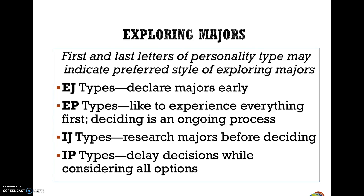You can see how your letters relate to exploring and deciding on majors. If your first letter is E and last letter is J, you can declare majors pretty early. If your first letter is E and last letter is P, you like to experience everything first before deciding — deciding is an ongoing process. I with a J means you research majors before deciding. I with a P means you delay decisions while considering all the options.